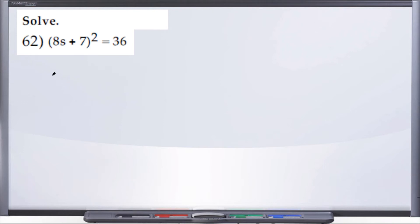We're solving problem 62, and we've been given the quantity 8s plus 7 squared equals 36. When they say solve, they mean let's solve for s.